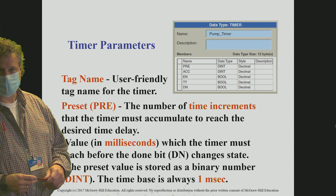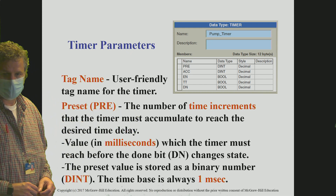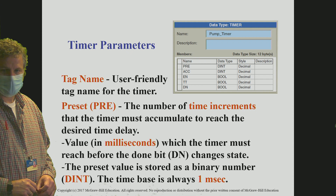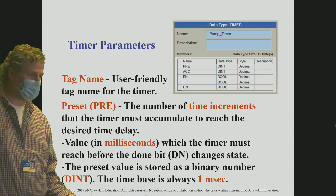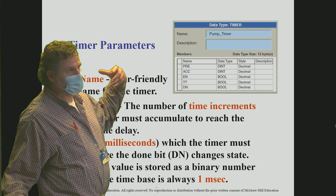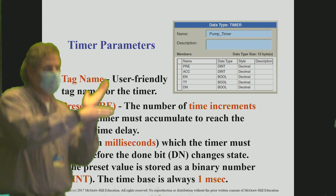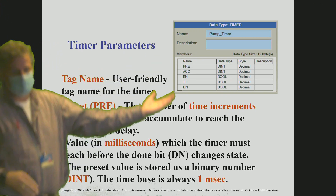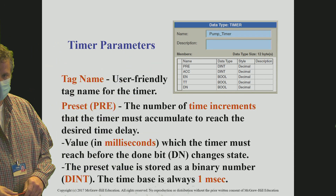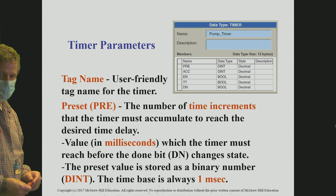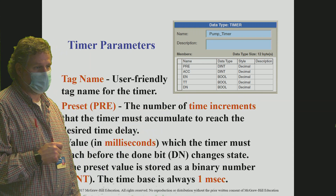Here we're looking at the preset — they're defining it as a number of time increments to accumulate to reach the desired delay. When we put a value in there, as that accumulated value is timing up to reach that value, when it reaches that value, the done bit turns on. Keep in mind all this is in double integer, so it's a very large number we can attain if we need to.